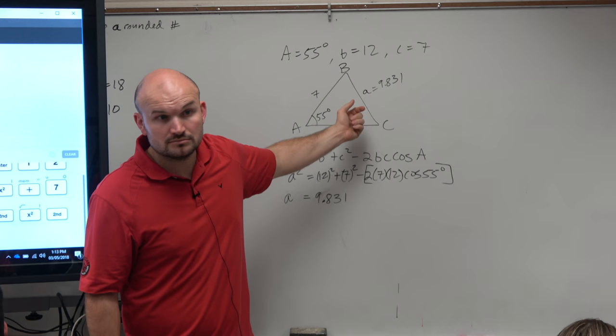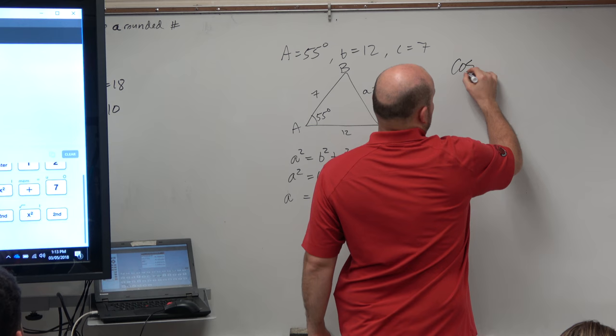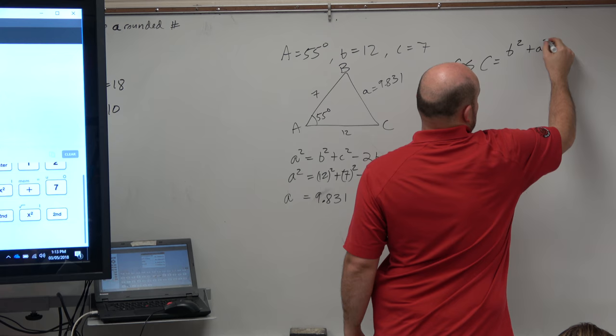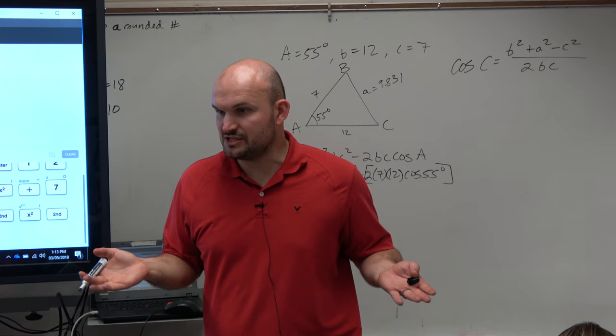So again, I have a formula for C. I can say cosine of C is b squared plus a squared minus c squared all over 2bc. Well, I already have all this information, right? Yes? Yes, no? Yes, sir.